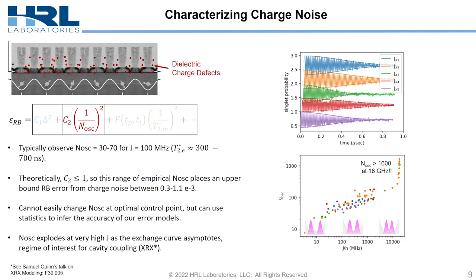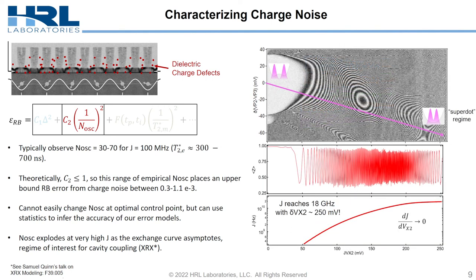We can't easily change N_osc in these devices at the optimal operating point for a fixed J, but we can vary J. And as we see in this plot of N_osc versus exchange frequency, the oscillation quality factor goes up slowly and then explodes as we hit about 20 GHz.